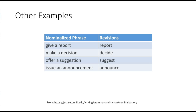Here are some good examples. Often people say 'give a report' — just use 'report,' because that's the verb. Or 'make a decision' — use 'decide.' 'Offer a suggestion' — use 'suggest.' 'Issue an announcement' — well, you're announcing something. These expressions are grammatically correct but a little verbose. Being less verbose is a really good idea for clear scientific communication. In each case, the noun form — report, decision, suggestion, announcement — should be replaced by the verb: report, decide, suggest, announce.